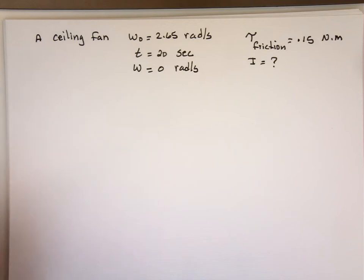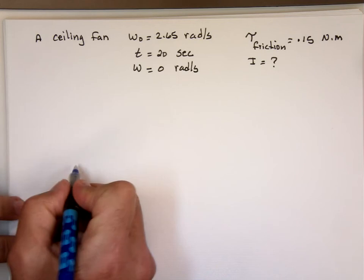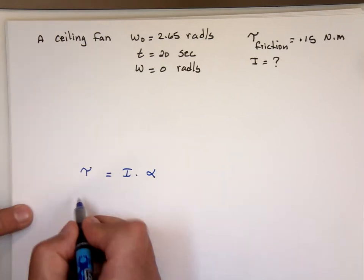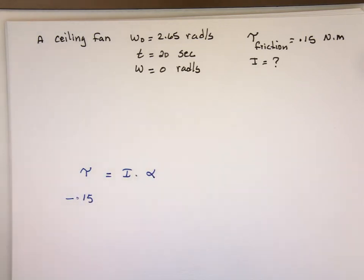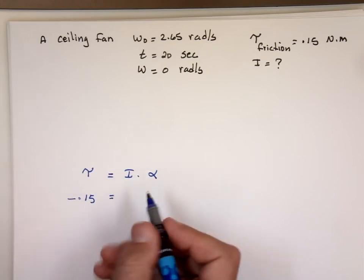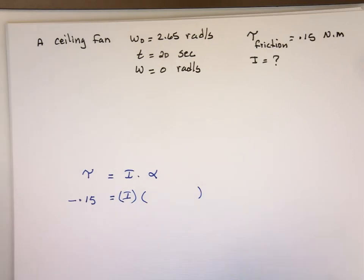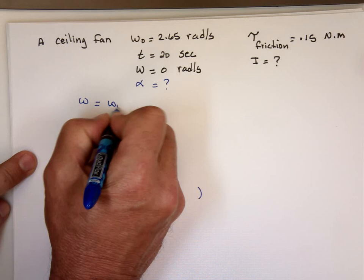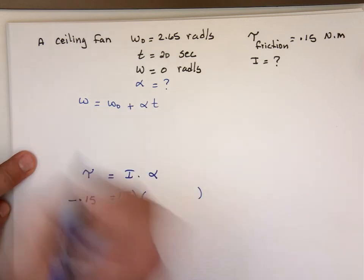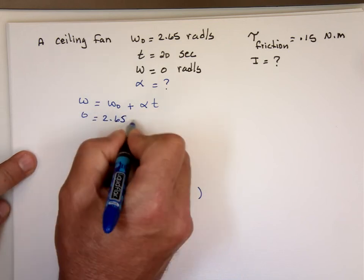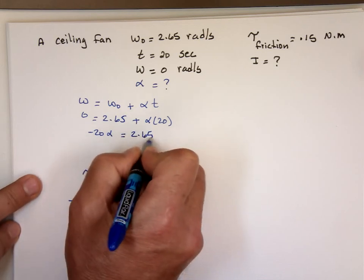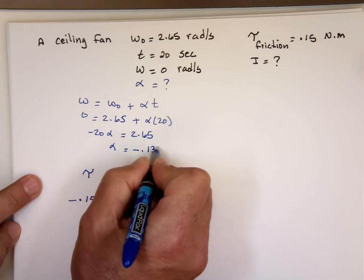There's only one equation that will tie the torque and the inertia. Torque is negative 0.15 because we're slowing it down. We don't know what alpha is. If I know what alpha is, I'm good. So, can I find what alpha is? 0 equals 2.65 plus alpha times 20. Negative 20 alpha equals 2.65, which means alpha equals negative 0.1325 rad per second squared.